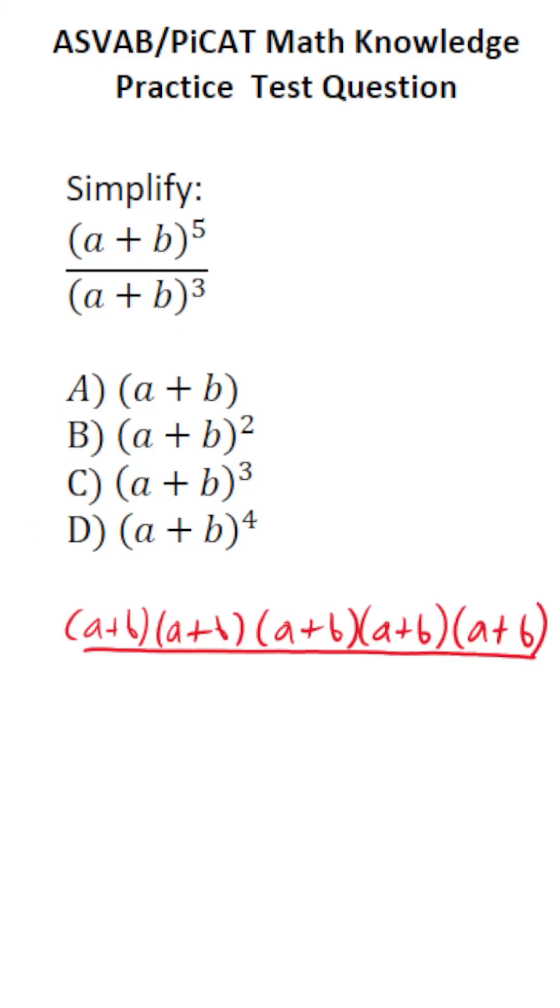And (a + b) to the third, likewise, means you take (a + b) and you multiply it by itself three times, of course. And if you recall,